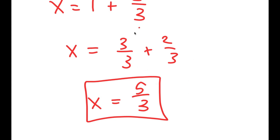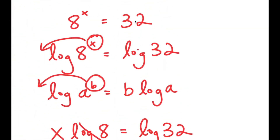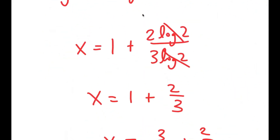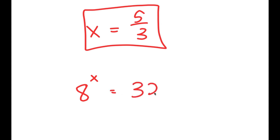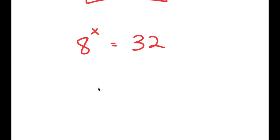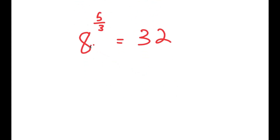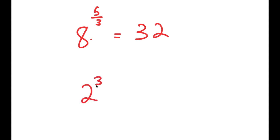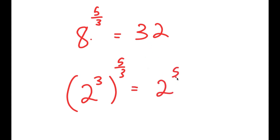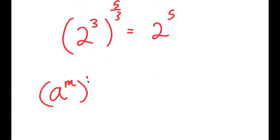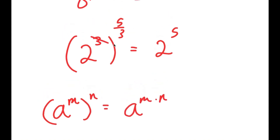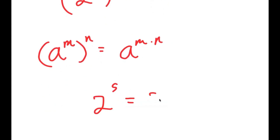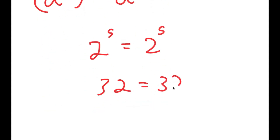Now, how do we know that this is the right answer? Going back, we have 8 to the power of x equals 32, and we're plugging in 5 over 3. So we get 8 to the power of 5 over 3 is equal to 32. Now, 8 is the same thing as 2 to the power of 3, so I get 2 to the power of 3, to the power of 5 over 3, which equals 2 to the power of 5. Using the power of a power rule, the two 3s cancel out, and I get 2 to the power of 5 is equal to 2 to the power of 5, or 32 equals 32. This is right.